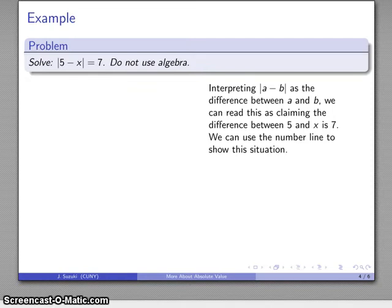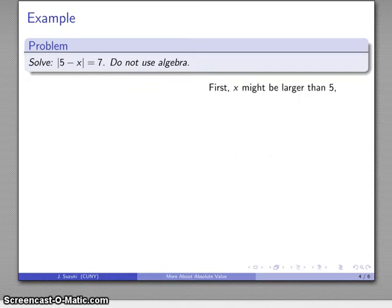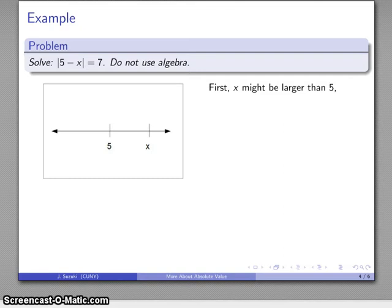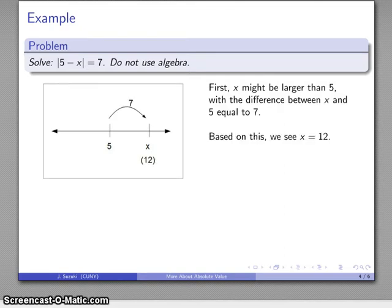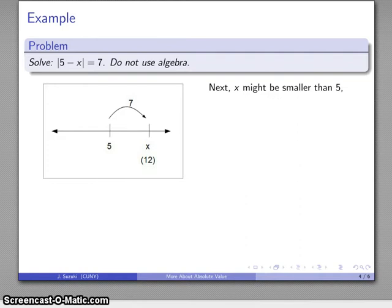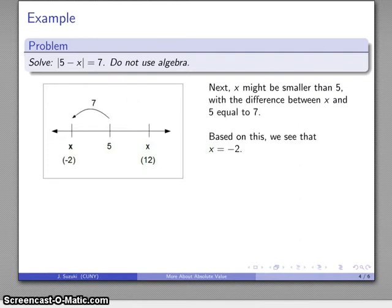And because there is a difference, 5 and X are different. So again, X might be larger than 5. And I can hop up 7 to get to X. And that tells me that X must be 12. Or X might be smaller than 5. I can hop back 7 to get to X. And that tells me that X is equal to negative 2. And I have my solutions. X equals negative 2 or 12.